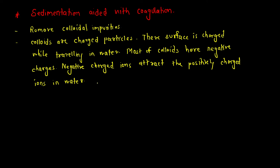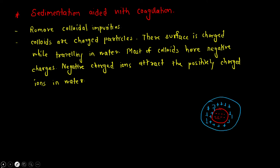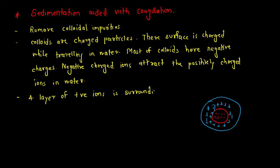Due to this attraction, there is a force of attraction between the negatively and positively charged ions. Because of this attractive force, a layer of positive charge surrounds the colloid. To understand it, I am drawing it here — this is the main colloid having negative charges, and there is a layer of positively charged ions surrounding it.